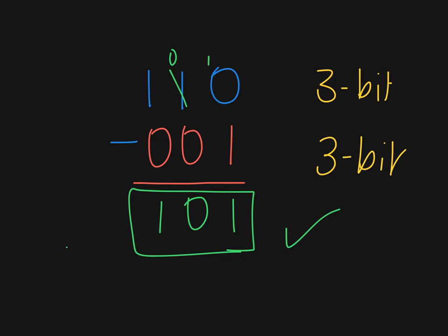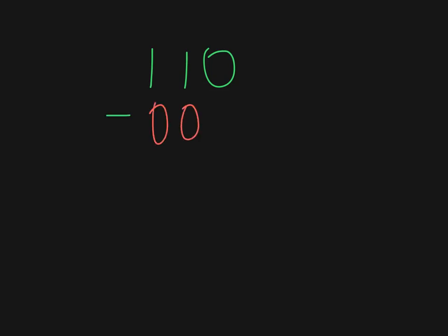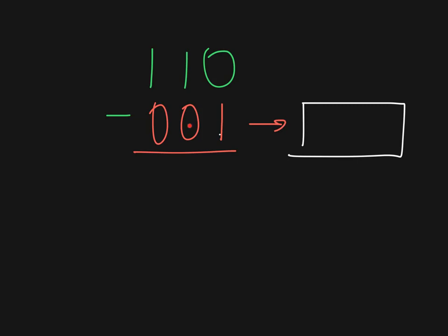So here's our subtraction again: 110 minus 001. The first step is to convert 001 to its one's complement. Taking each digit: zero converts to one, zero converts to one, one converts to zero. So the one's complement of 001 is 110. In principle, I can now add that to the first number and should come to the same result.